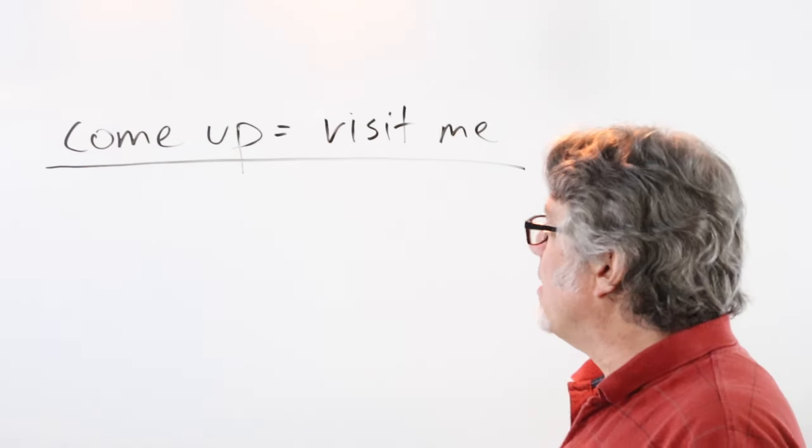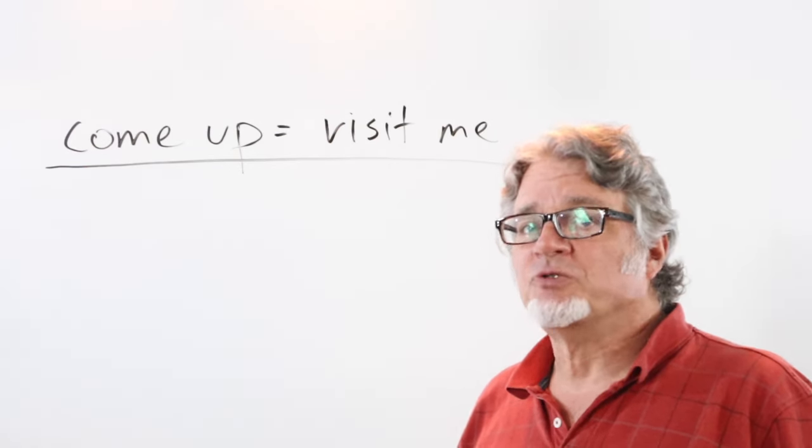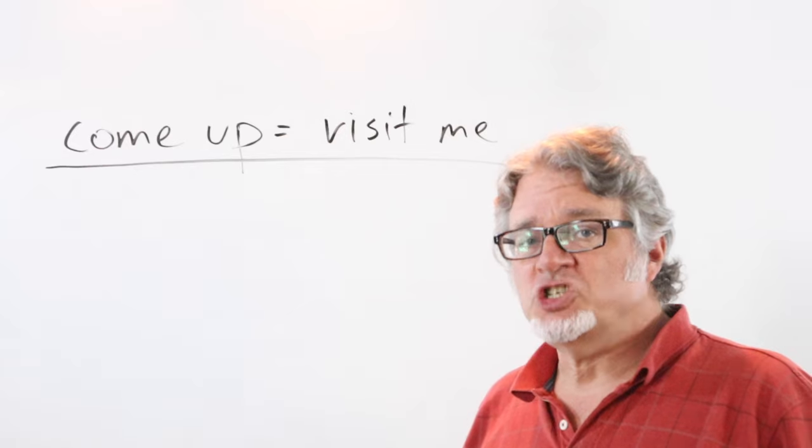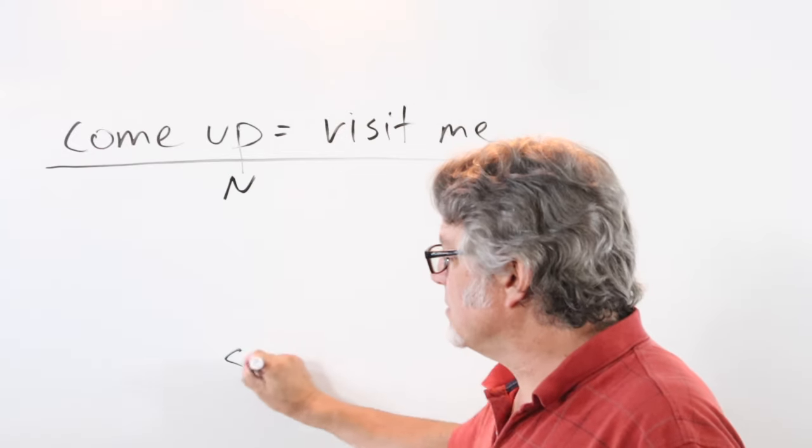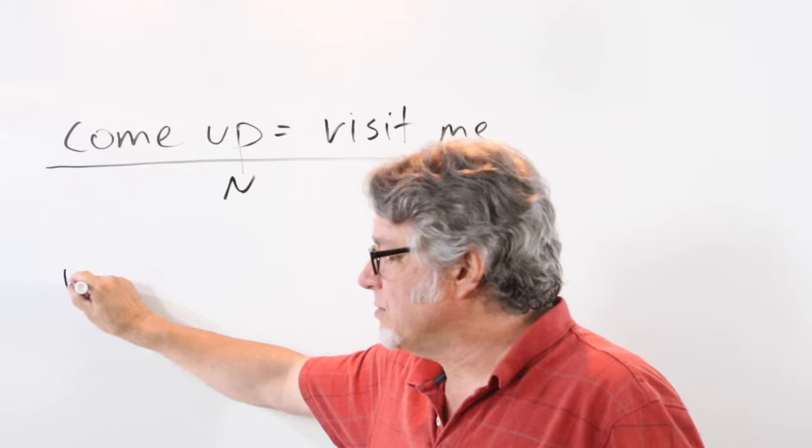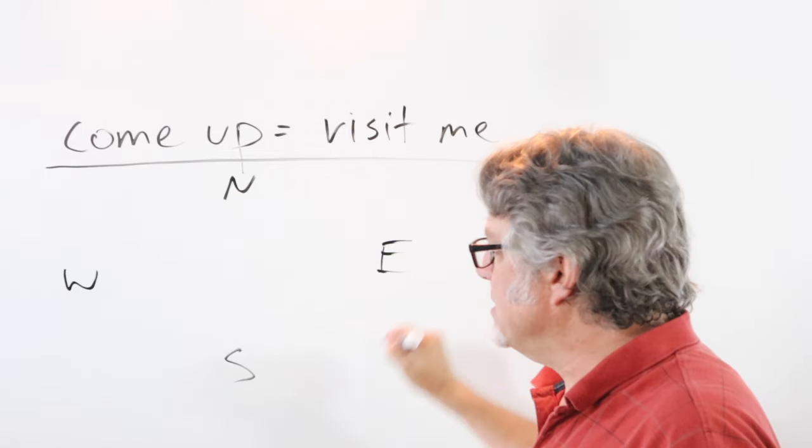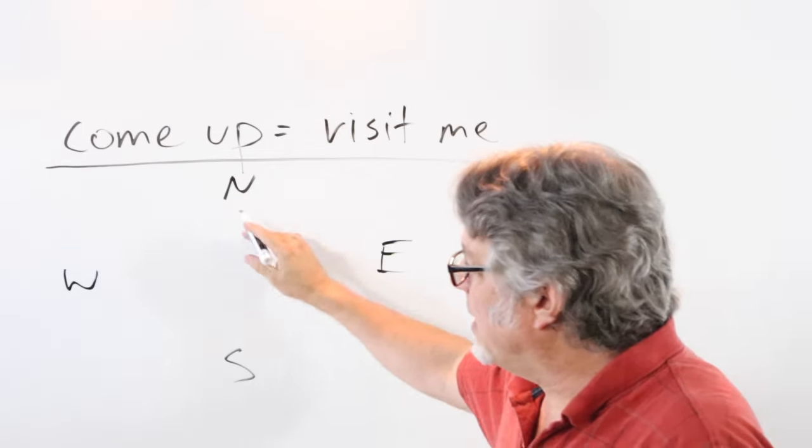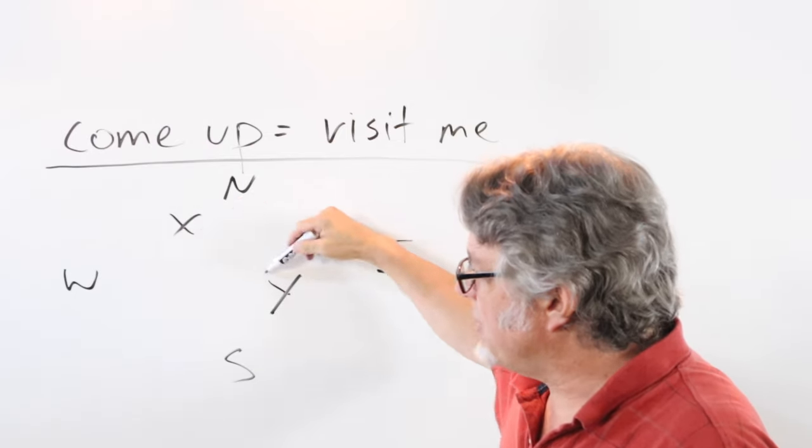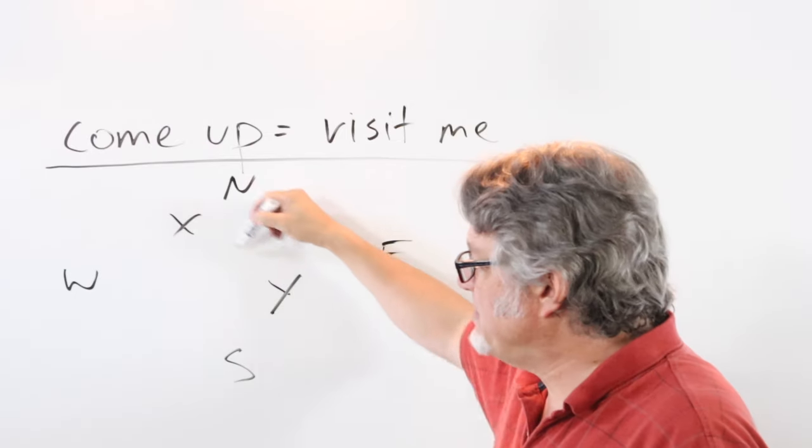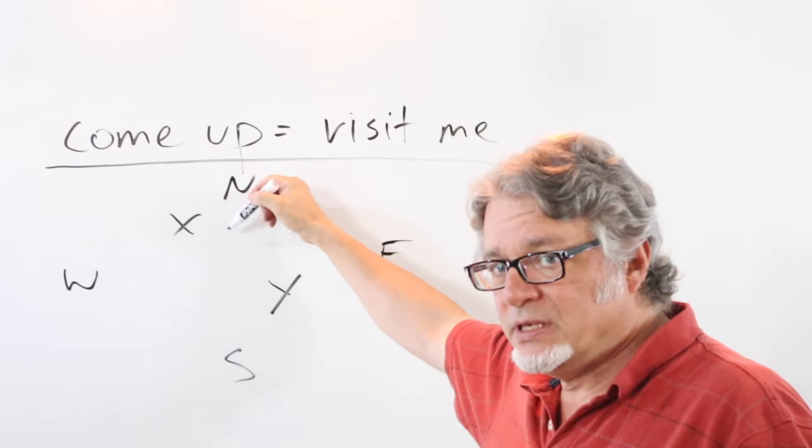Come up for a visit is related to some sort of geographical location. Here's north, south, this is west, and then this is east. So if I'm here and you're there, then I'll say come up and see me. Come up and see me sometime.